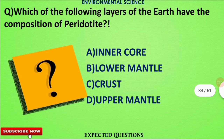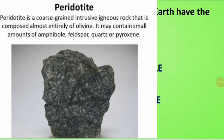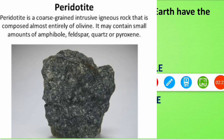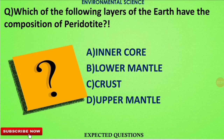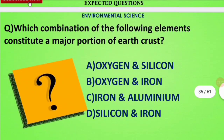The next question is: which layer of the Earth has the composition of peridotite? The correct answer is option A — the inner core region has the composition of peridotite.